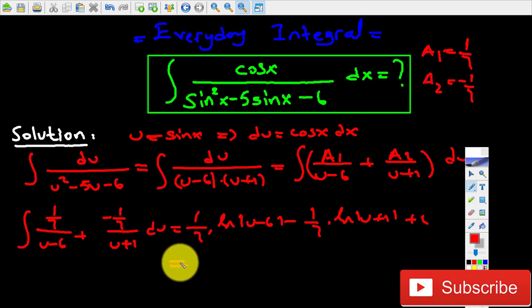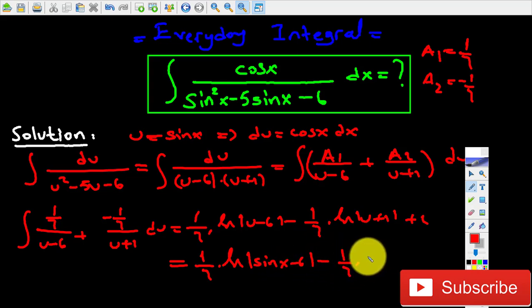Now it's time to change u with sine x, because remember that we said sine x equals u. So 1 over 7 times natural log (sine x minus 6) minus 1 over 7 times natural log (sine x plus 1) plus C. That's going to be our final answer.